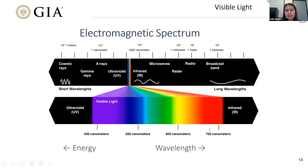Since we're talking about color, let's also discuss the electromagnetic spectrum. Visible light occurs within a very narrow band, and it's amazing that everything we see in the world occurs within this range. In gemology, we focus on a little bit of the ultraviolet, the visible from 400 to 700 nanometers, and a little into the infrared.